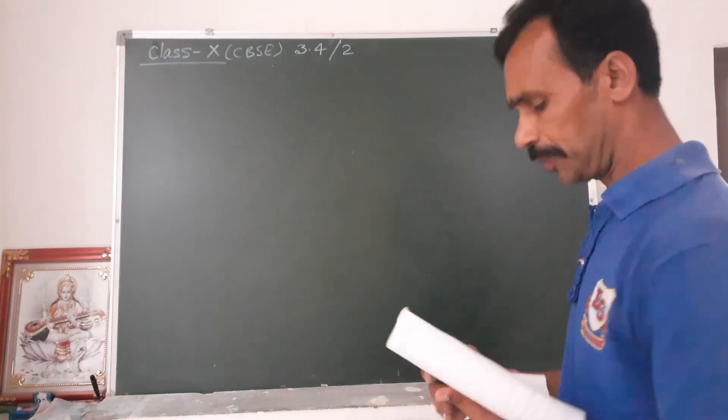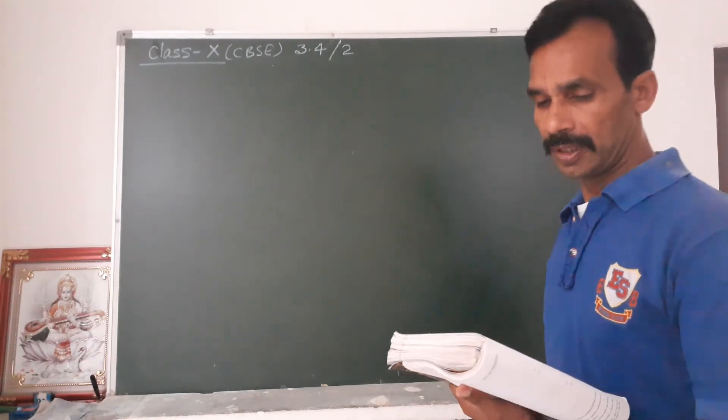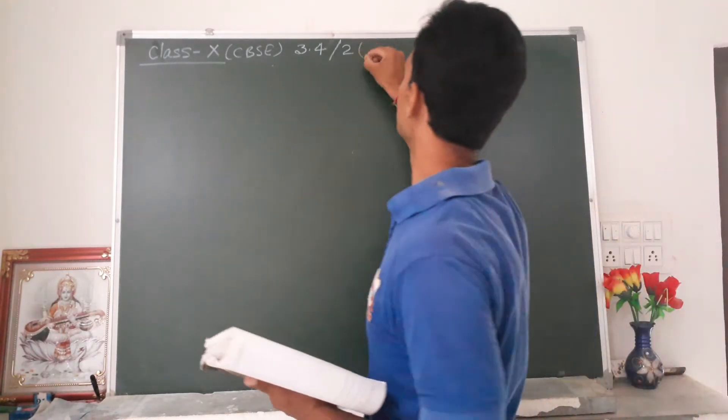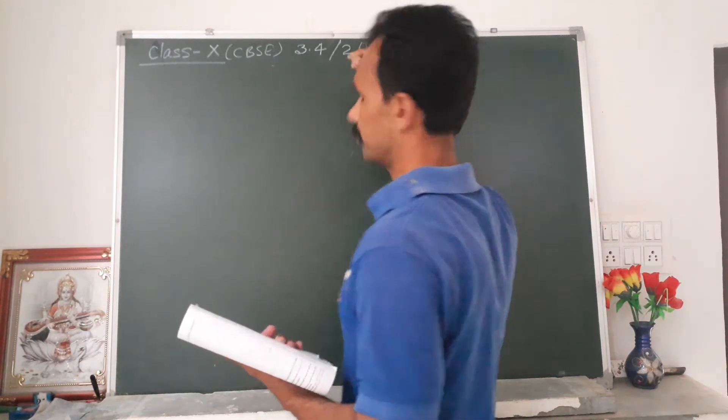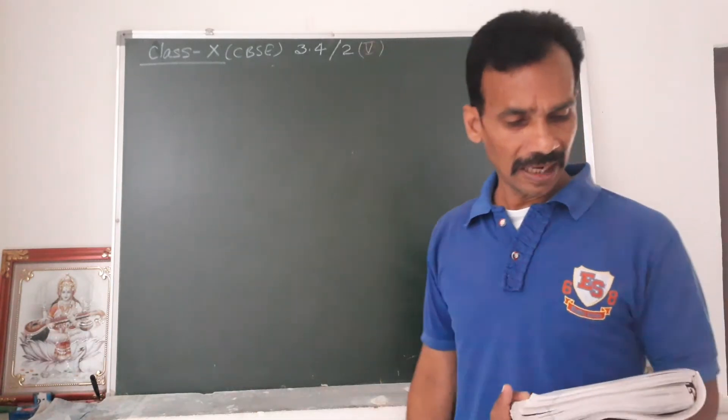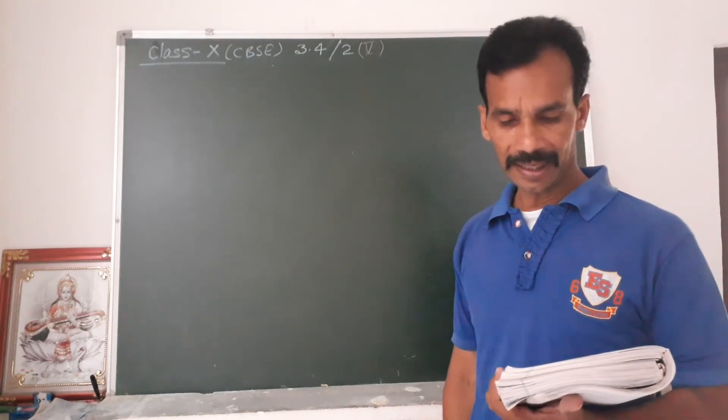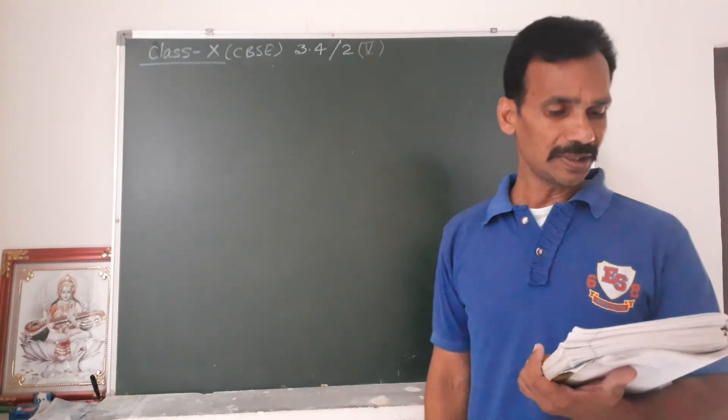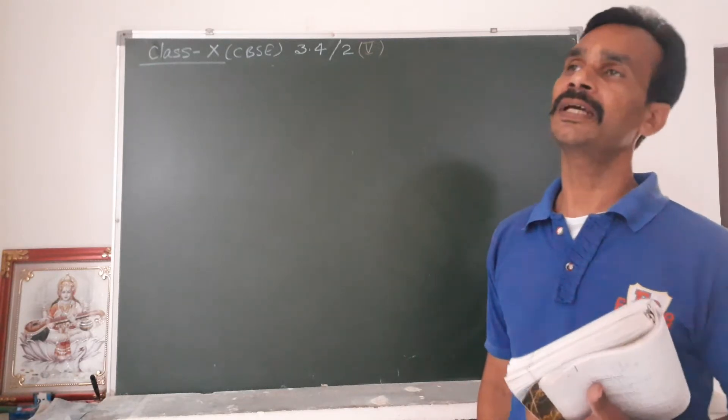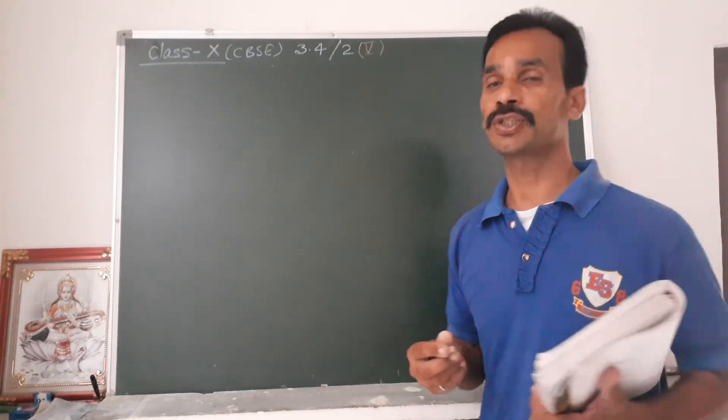Now exercise 3.4, question number 2, fifth one. A lending library has a fixed charge for the first three days and an additional charge for each day. The library has a fixed charge.